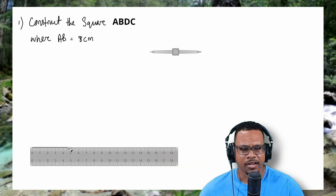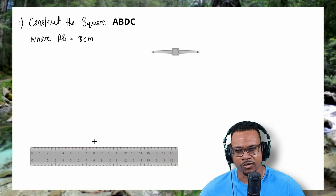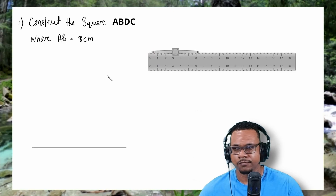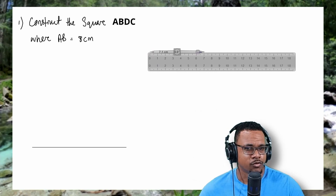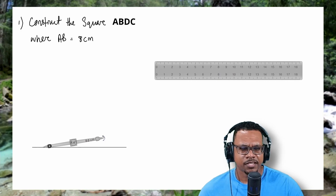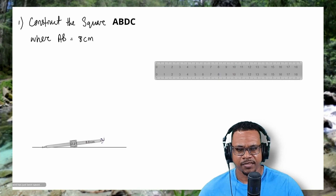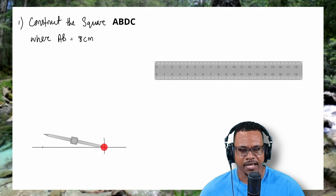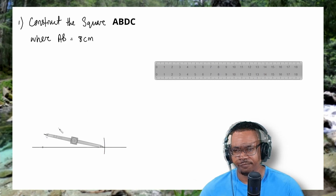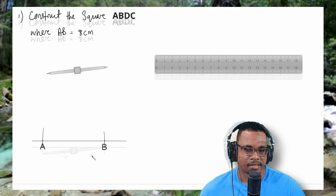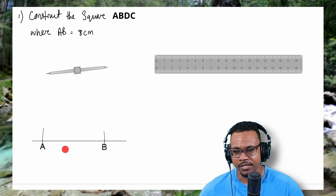First I'll draw a light line that's more than 8cm long. Then I'll place the compass point at the 0 on the ruler, and open the compass out to 8cm. Then I'm going to place the compass point at any point on the line and make an arc. Then I'm going to place the compass point where the arc cuts the line and make another arc. And that will give us our line segment AB.